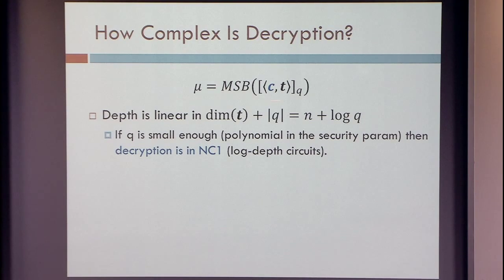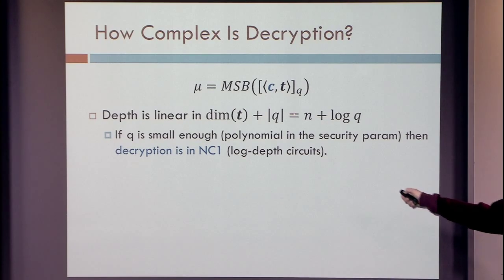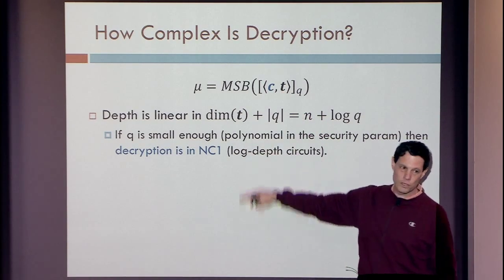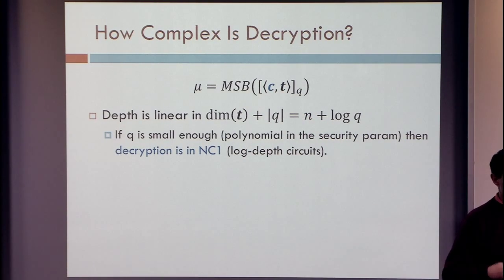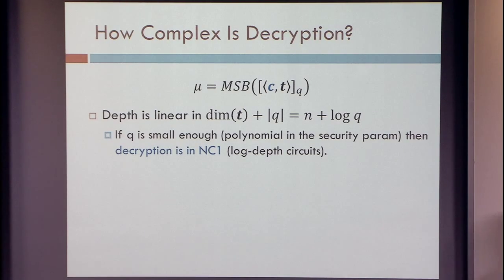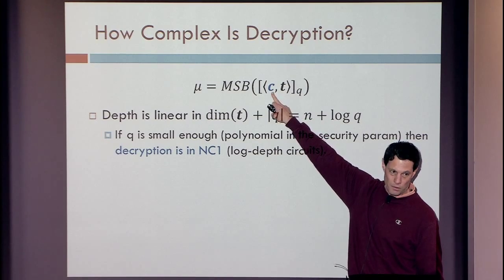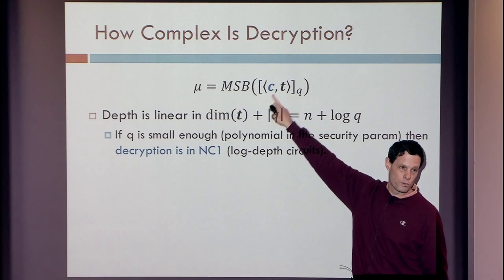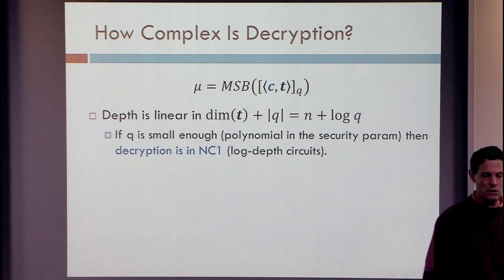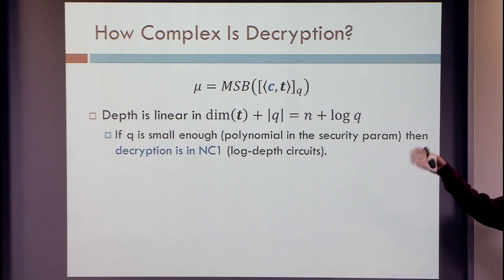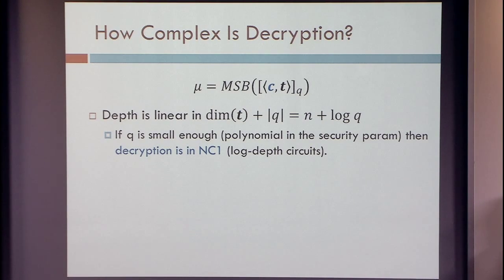Here is our new decryption procedure — what is the complexity of doing that? We have these two vectors, we need to take an inner product. Think of these things as represented in binary. You need to do integer products and integer addition and then mod-q reduction. How difficult — what is the complexity of doing all these operations? They're all logarithmic — it's log in the dimension of these vectors and log in the bit length of q. So you get depth which is essentially n plus log q, or some constant factor times n plus log q.